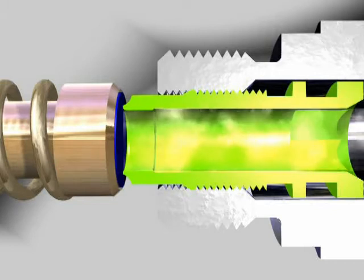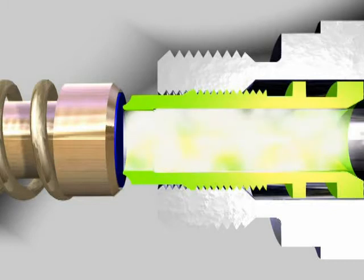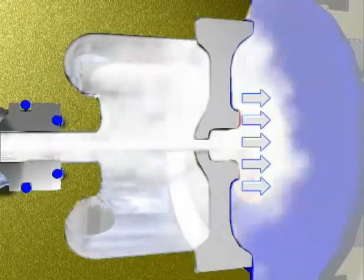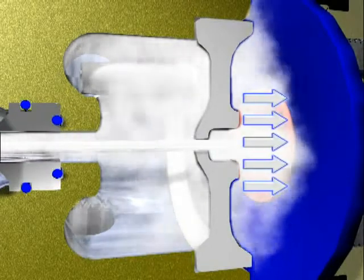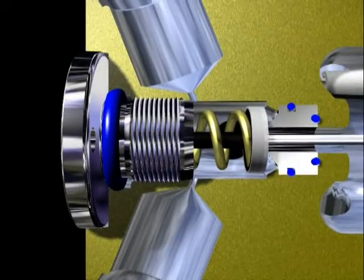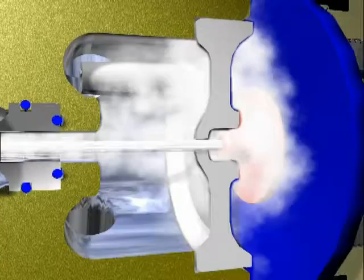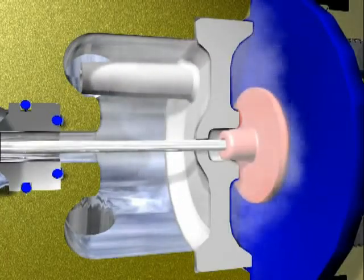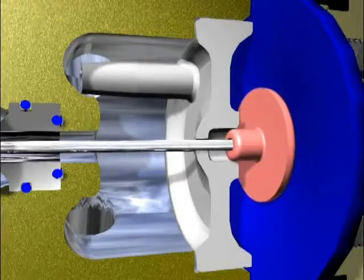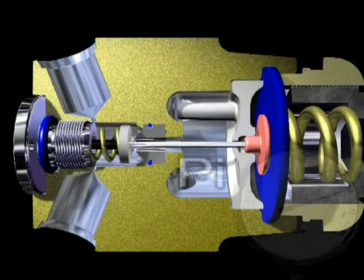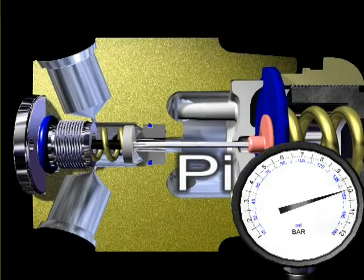The pressure increases, acting simultaneously on the first stage diaphragm. The diaphragm flexes, thus transmitting the movement to the first stage valve, which in turn interrupts the flow of air. The pressure reached inside the balancing chamber is called intermediate pressure.